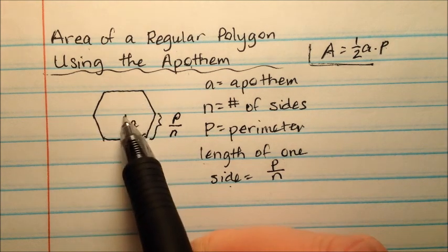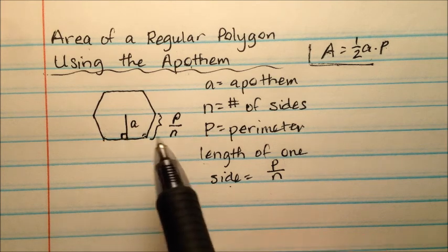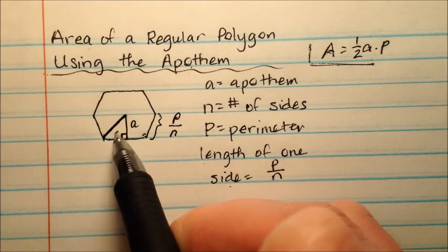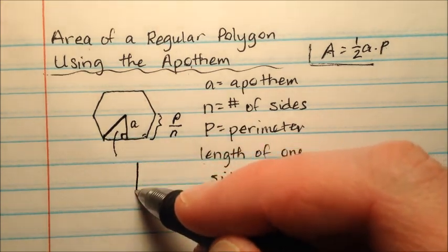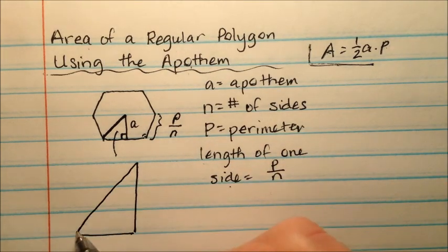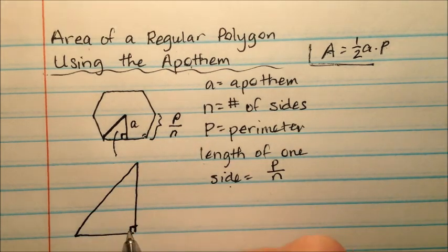We have our figure and our apothem comes down and makes a right angle. I bet if I drew a line from the center to a vertex, I could get a nice right triangle. Well, let's make that right triangle a little bigger just so we can kind of get a better view of it. We can manipulate it a little bit here.